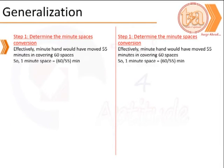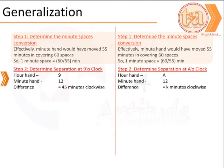The first step in generalization is to find the equivalent of 1 minute space, which is always going to be 60/55 minutes. The next step is to find the initial position — in this case it is 9 o'clock, where the hour hand is at 9 and the minute hand at 12. In a general case, at A o'clock, the hour hand would be at numeral A and the minute hand at 12. We assume that the difference is essentially k minutes in the clockwise direction.